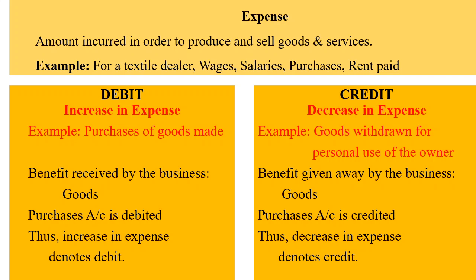Credit denotes decrease in expense. Example: goods withdrawn for personal use of the owner. The benefit given away by the business is goods, and so the purchases account is credited. Thus, decrease in expense denotes credit.